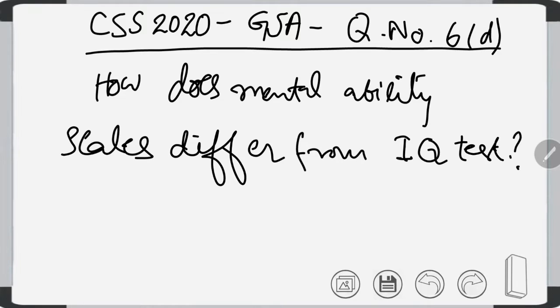Assalamualaikum. In this video, we will solve question number six, part A, of CSS 2020 General Science and Ability paper. The question asks: How does mental ability scales differ from IQ test? Before making the comparison, we must know what are the different scales of mental ability.